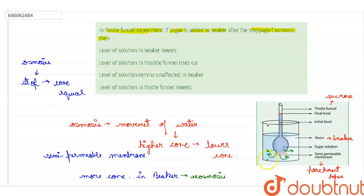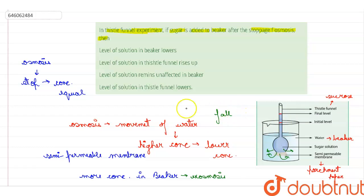There will be exosmosis and the water will move from the thistle funnel to the outside because the outside concentration of solute will be more. Water will move from inside to the outside, so the water level in the thistle funnel will fall.